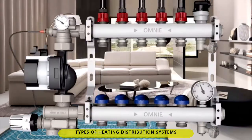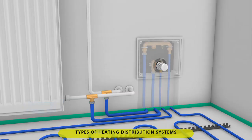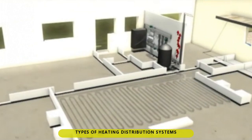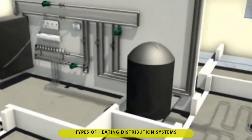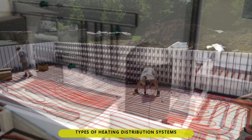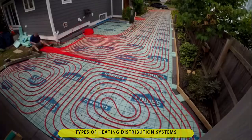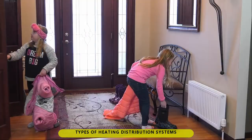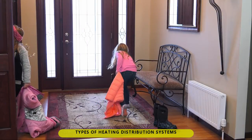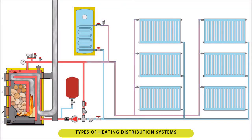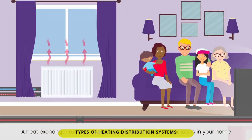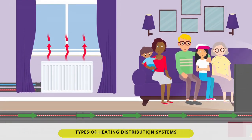4. Hydronic heating: uses a series of sealed pipes embedded on interior floors, that is heated by a boiler or a heat pump. Also used for swimming pools and to melt snow on driveways. 5. Central heating: uses an exposed radiator that is connected to a metal pipe which is heated by a boiler or a heat pump, to warm a room via radiation or convection.